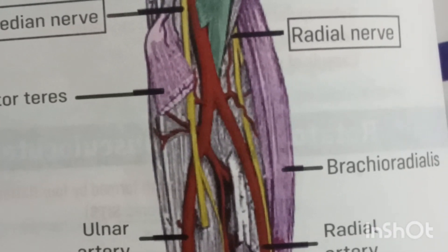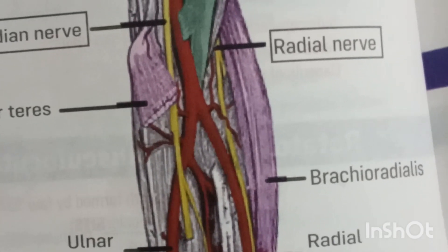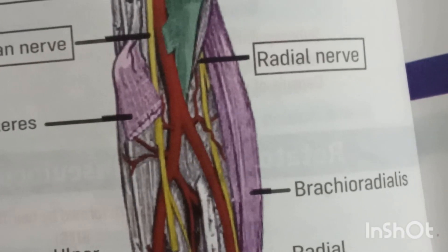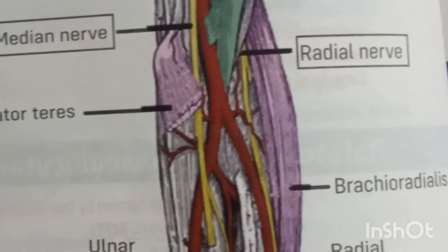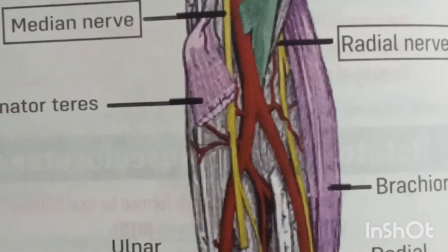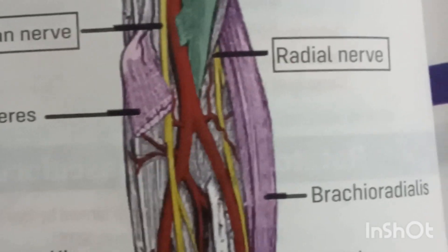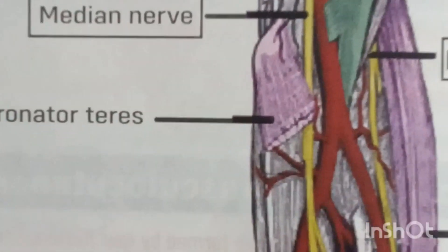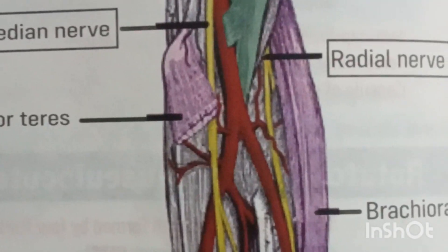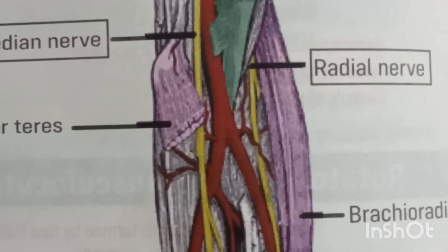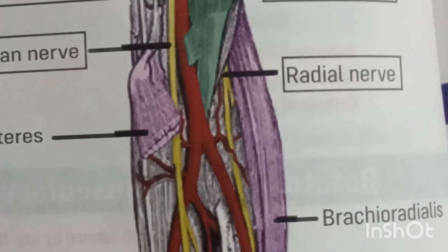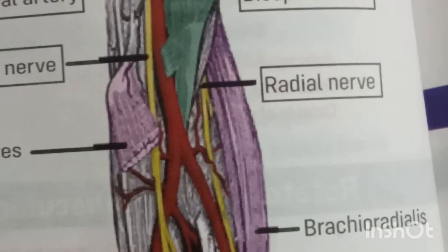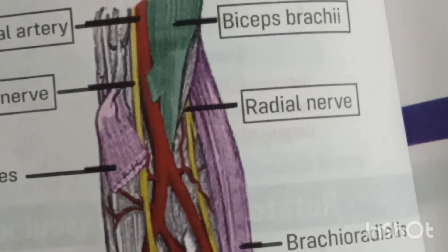Cubital Fossa: a triangular hollow situated in front of the elbow. Its boundaries are: laterally, the medial border of Brachioradialis; and medially, the lateral border of Pronator Teres. The base is directed upward, formed by an imaginary line joining the two epicondyles of the humerus. The apex is directed downward, formed by the meeting of Pronator Teres.